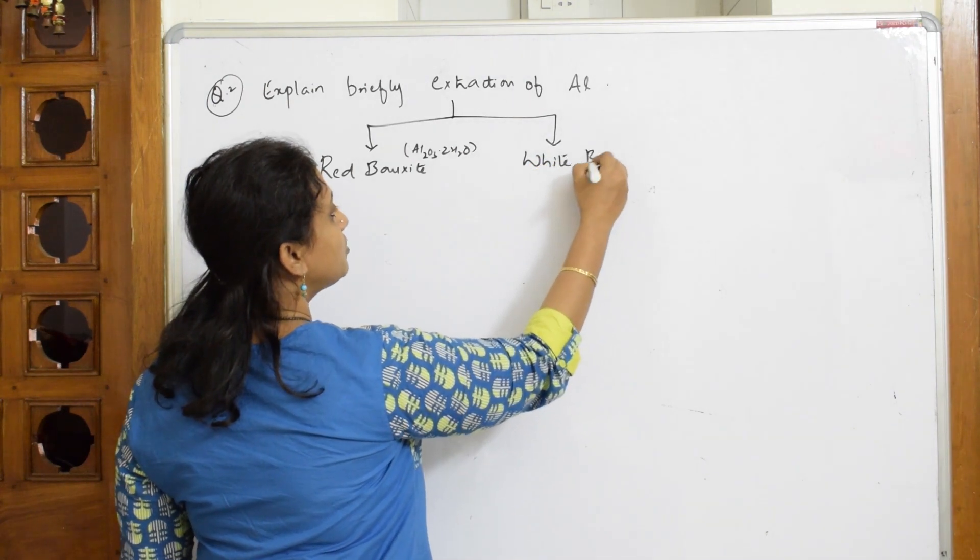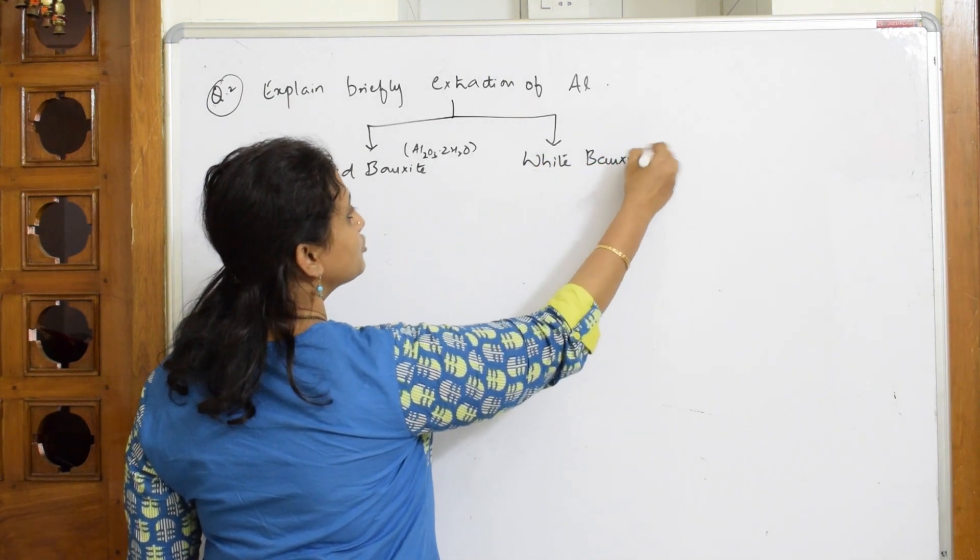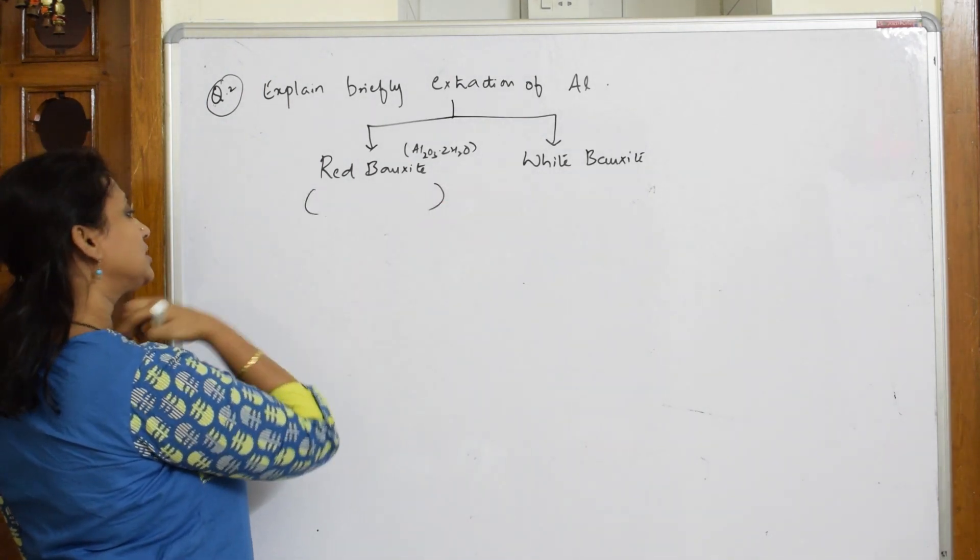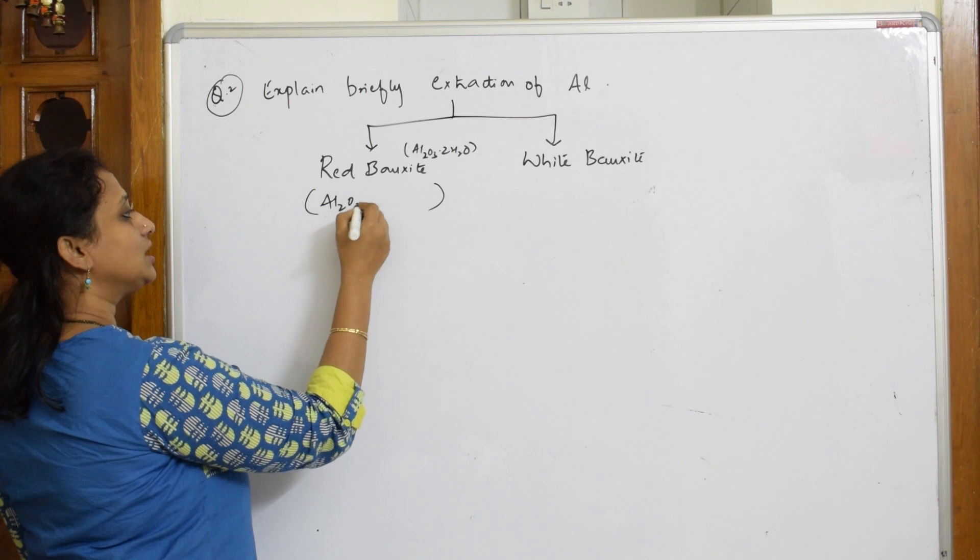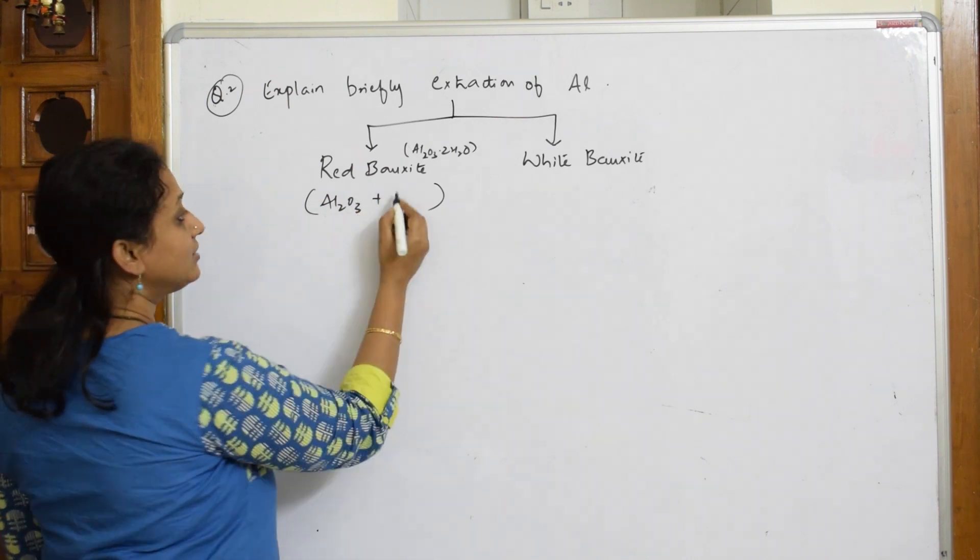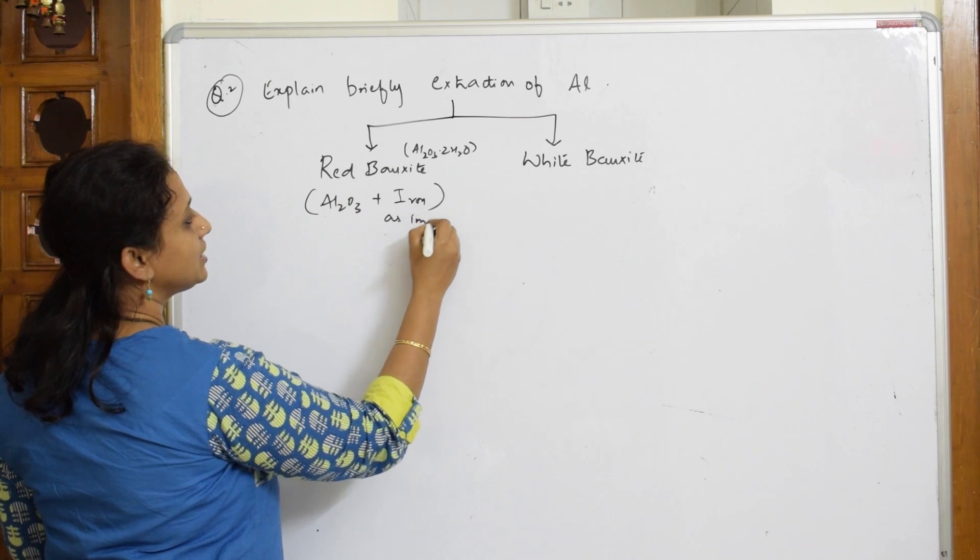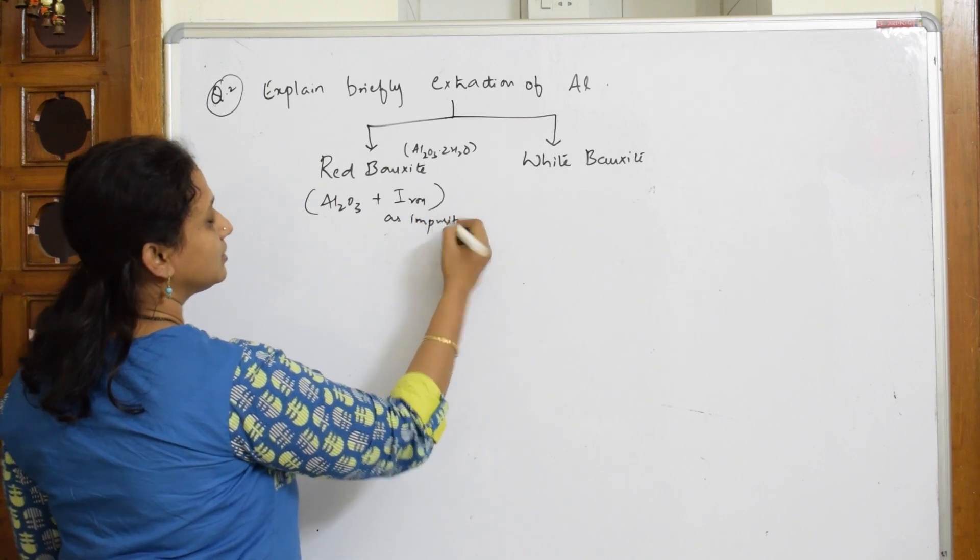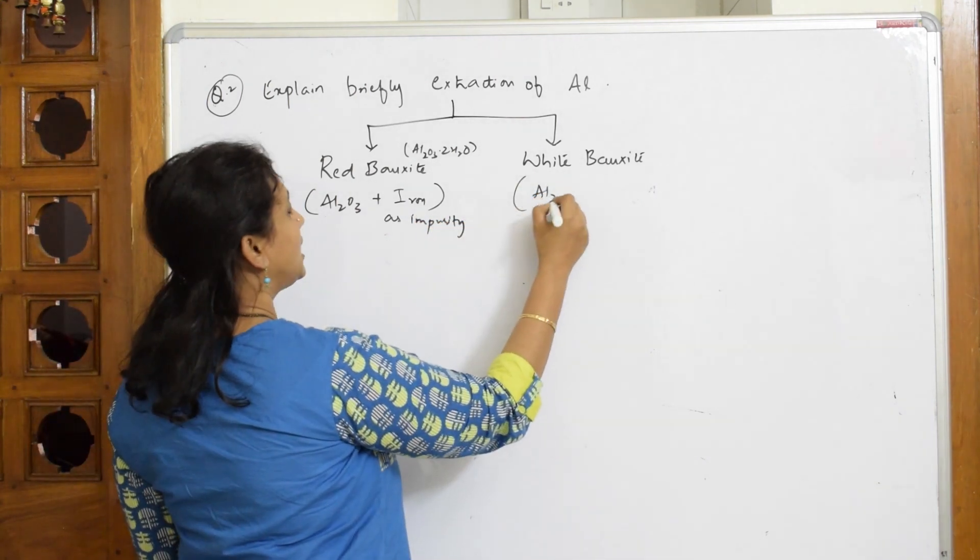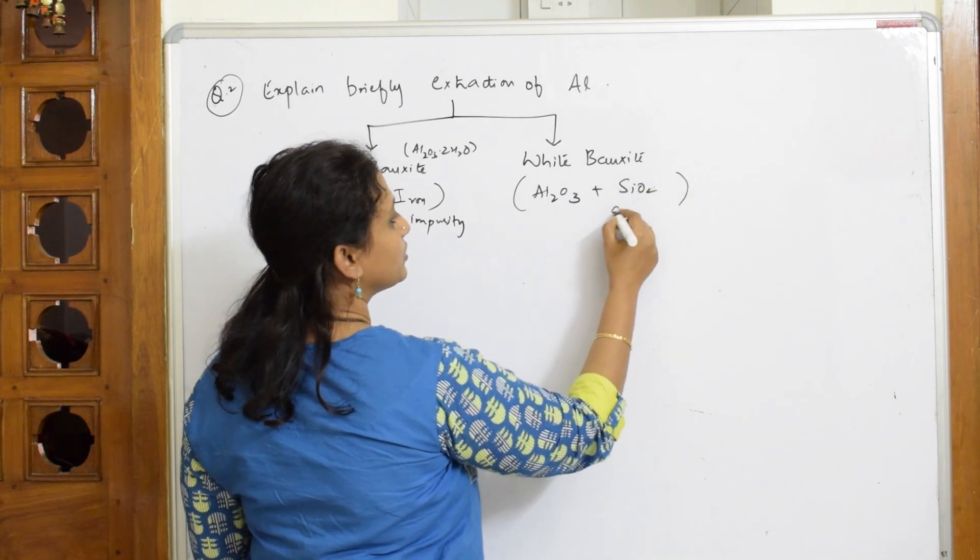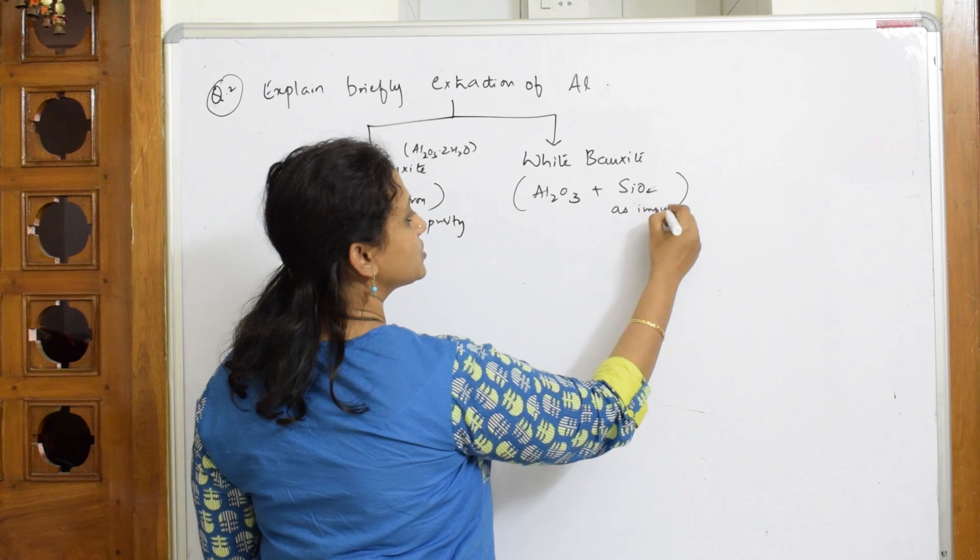So red bauxite and white bauxite if I have to extract it. Red bauxite contains Al2O3 along with iron oxide as impurity. And for white bauxite you have Al2O3 and SiO2 silica is an impurity. So you have to remove these impurities.